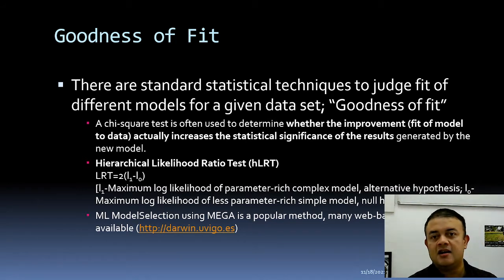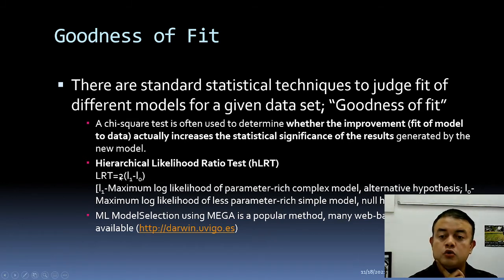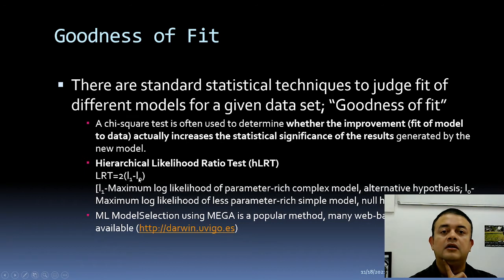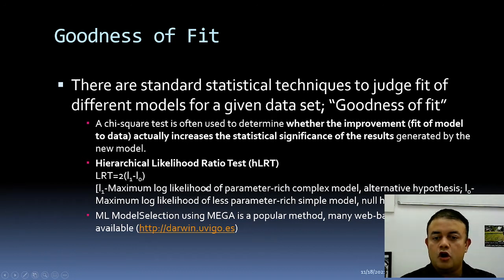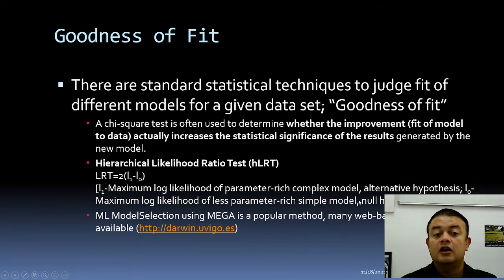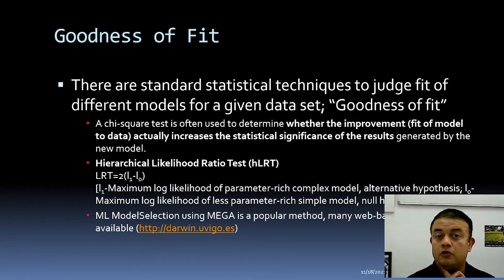The hLRT formula is very simple: 2 multiplied by (likelihood of model 1 minus likelihood of model 2). The second model is the null model — the null hypothesis — while the first is the alternative hypothesis. L1 is the maximum log likelihood of the parameter-rich complex model (alternative hypothesis), and L0 is the maximum log likelihood of the simpler model (null hypothesis). Both methods are based on maximum likelihood.